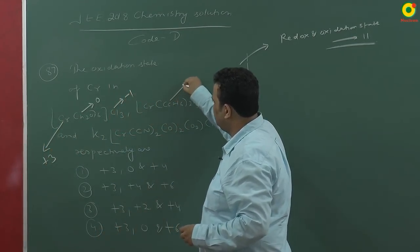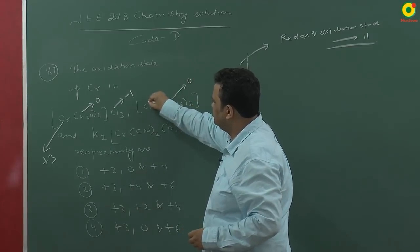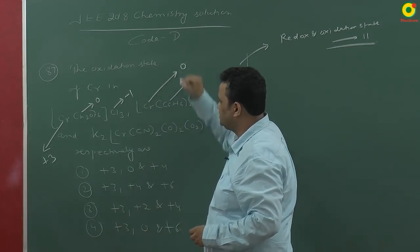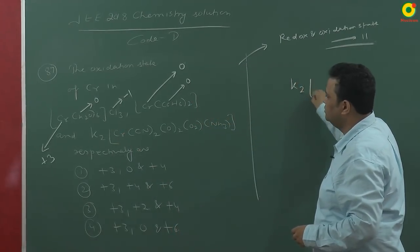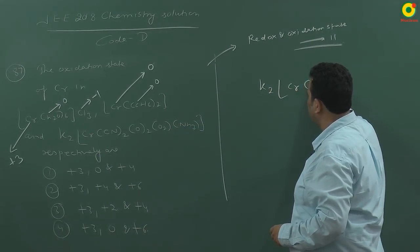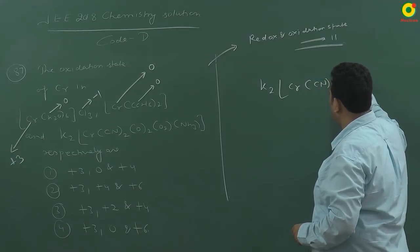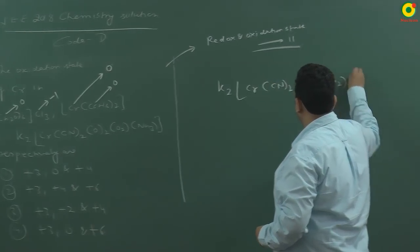Benzene is a neutral molecule, so in this compound chromium is in 0 state. Potassium I can write here K2 Cr(CN)2 O2, O2 and ammonia.